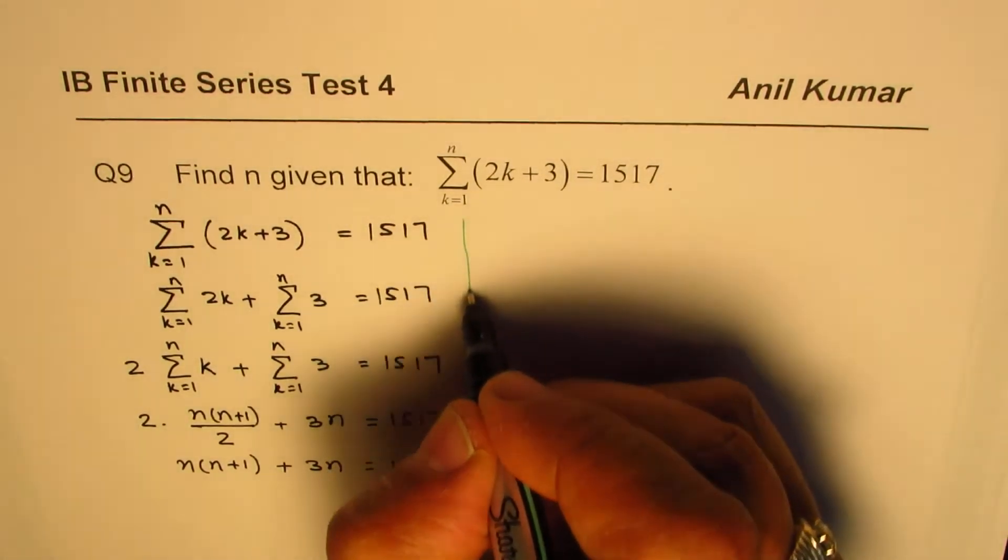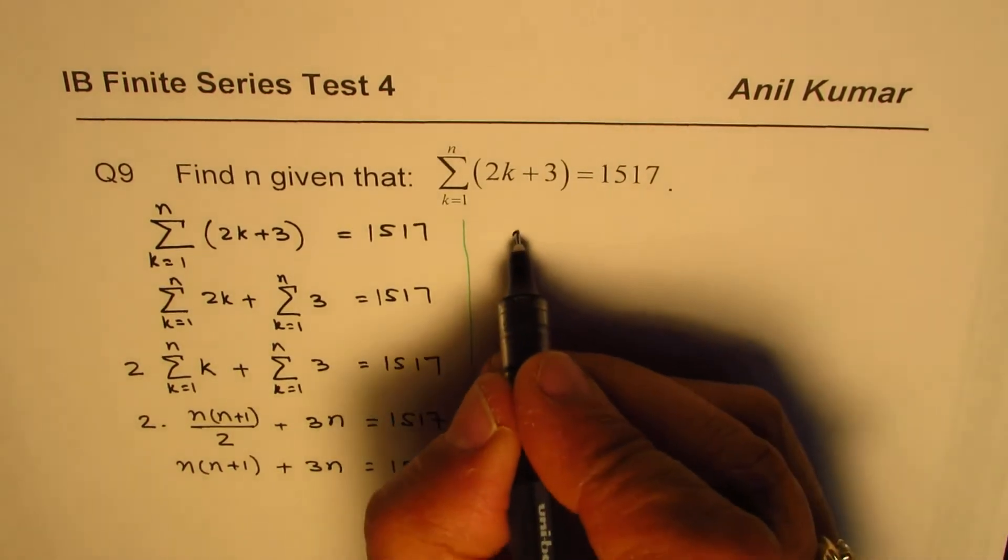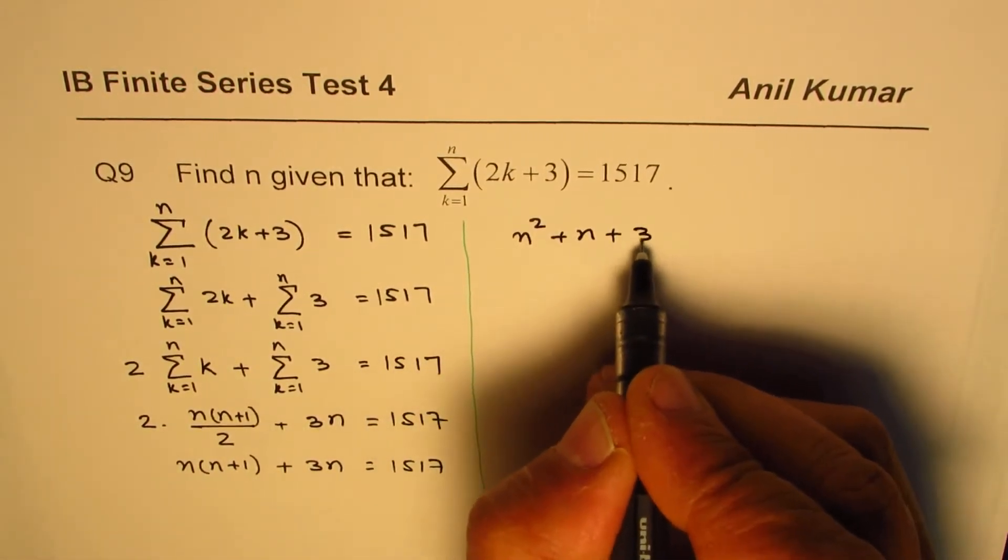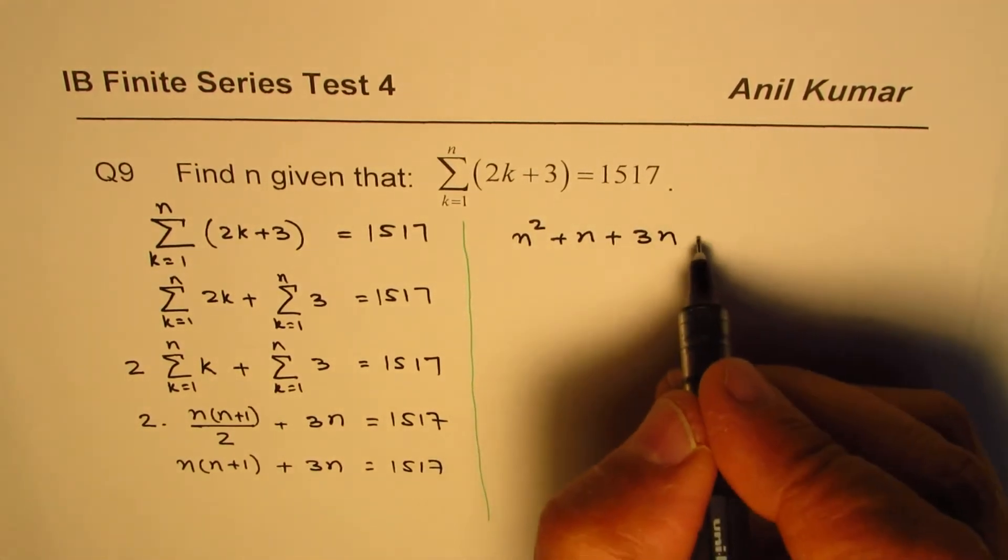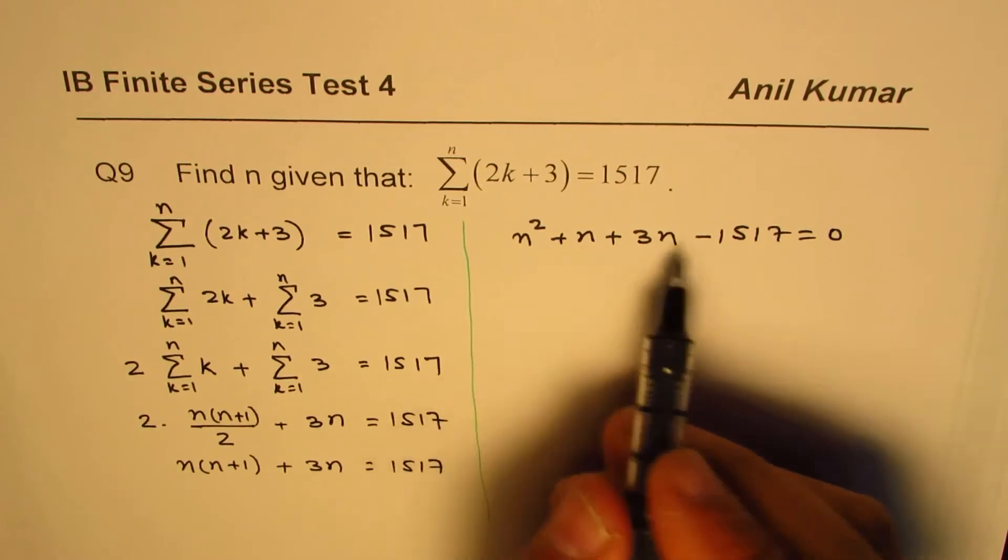And now we will take it to the right side and further simplify. Expand, which you get n squared plus n plus 3n, bringing 1517 to the left side equals to 0.